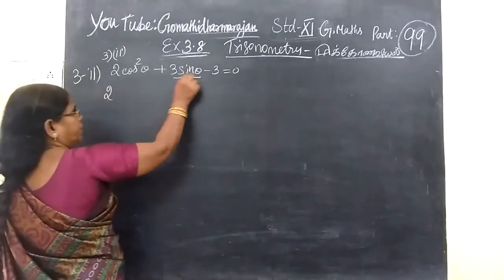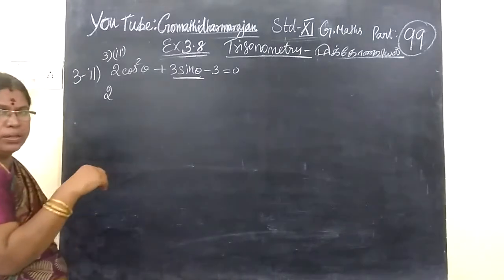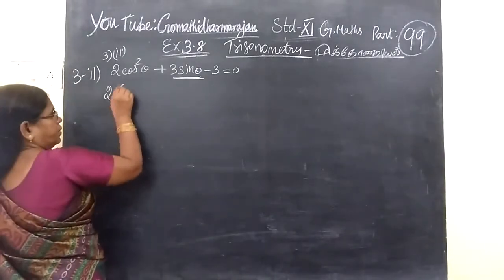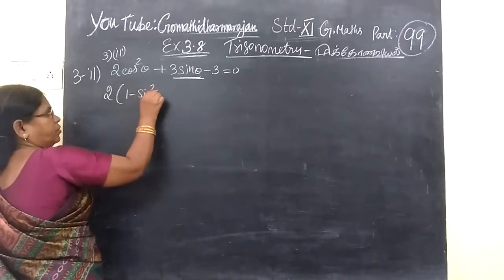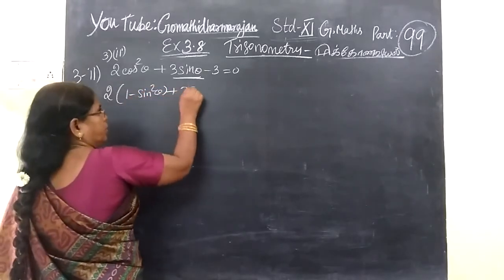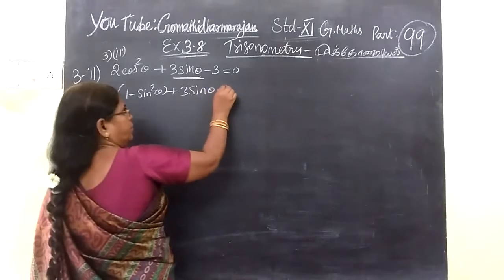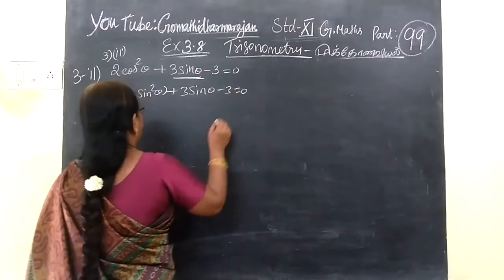Now we write in the time sheet in terms of time sheet. So it will write that 1 minus sin squared theta minus 3 sin theta minus 3 equal to 0.